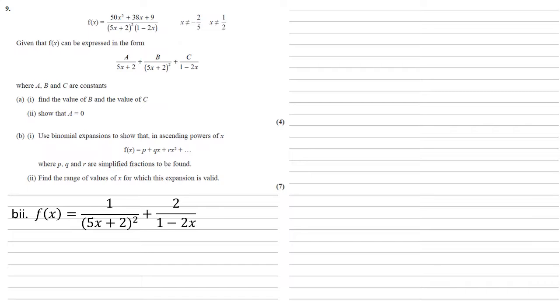So for example, the modulus of 5x has to be smaller than 1, and the modulus of 2x is going to be smaller than 1. Rearranging those, we would get that the modulus of x is smaller than 2 fifths for our first fraction, and for the second fraction, the modulus of x is smaller than a half.